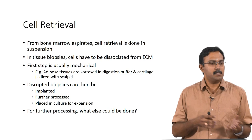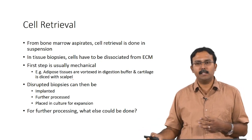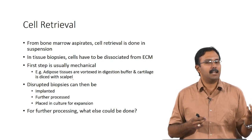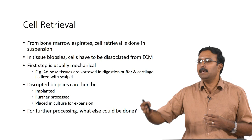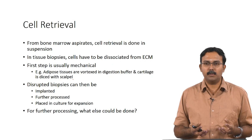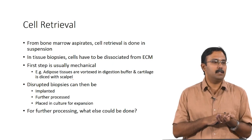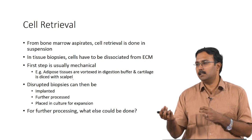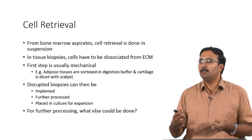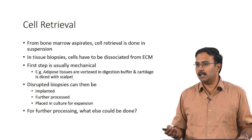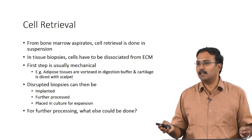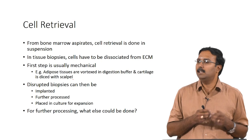The biopsies and aspirates obtained are a mixture of cells and may need further processing before use in tissue engineering. Bone marrow aspirates are basically suspensions, so cell retrieval can be done directly. Tissue biopsies, however, have extracellular matrix attached — the cells are adhered to the ECM — so you need to make sure the ECM is removed before working with the cells. This is the opposite of decellularization: you need to remove the ECM without damaging the cells.